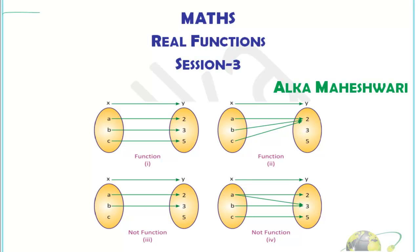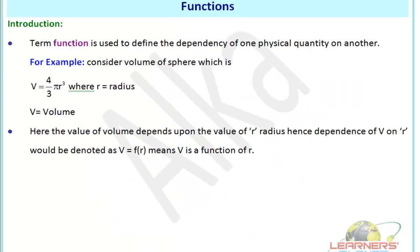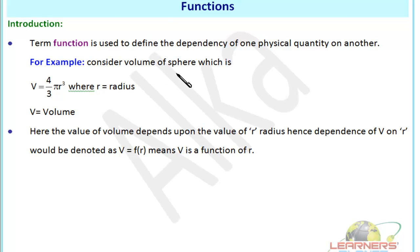Let's discuss the definition of functions. The term function is used to define the dependency of one physical quantity on another. For example, consider the volume of a sphere: V = (4/3)πr³. Here, r is the radius, 4/3 is an absolute constant, π is an absolute constant, and V is the volume. The value of this volume depends upon the value of r, the radius.